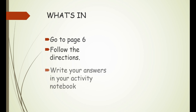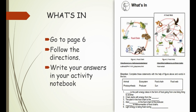Let's have more activities that have something to do with our lesson today. Go to page 6 of your module — "What's In." Complete the statements with the help of figures above and words in the box. Number 1: Blank is the path energy takes in the form of food going from one living thing to another. The correct answer is food chain. Are you ready to answer? Let's go.